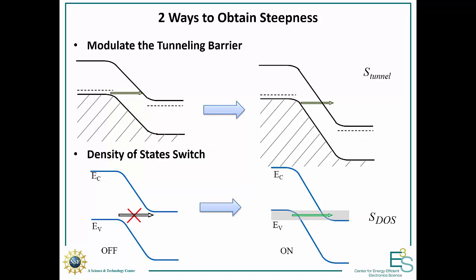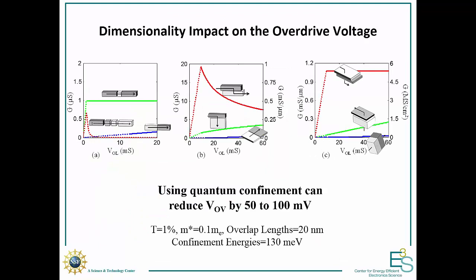The way to reduce overdrive voltage is to use the dimensionality discussed in the last section. When you have quantum confinement in the tunneling direction, you can greatly increase your on-state conductance. That means we reduce the overdrive voltage by 50 to 100 millivolts, because in a bulk junction the current would keep increasing slowly, taking 100 millivolts to match what you see with a 2D-to-2D junction. That's how you take advantage of dimensionality — to reduce the overdrive voltage.